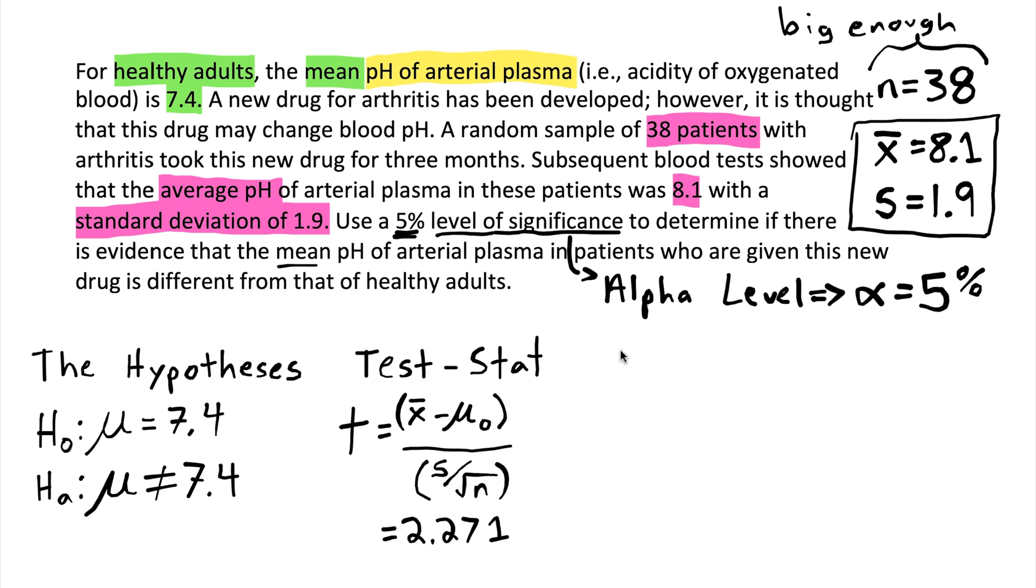So once we have our test statistic we can go ahead and do what's called finding the p-value. We are using the p-value approach in this problem. For me it's the most straightforward approach. The p-value is a probability that comes from the distribution of our test statistic. Our test statistic in this situation is a t statistic. And that means the p-value is going to come from a t distribution. And t distributions are described by a single number, called their degrees of freedom. The degrees of freedom is the sample size minus 1. And so since our sample size is 38, the degrees of freedom that we're going to be using in this problem is 37.